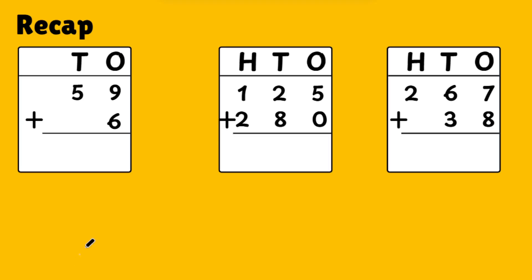Let me give you an introduction with a recap. What I have written is ones and tens — only two digits. You could have learned this in third grade. Now I am teaching for fourth grade, so this is the basic thing you learned in third grade. Let me give you a recap. We have given 59 plus 6. So 9 is in the ones place, 6 is in the ones place. 9 plus 6 — how do you add 9 plus 6?